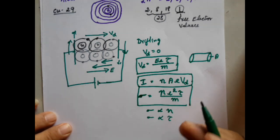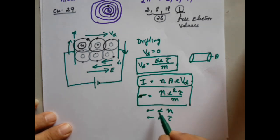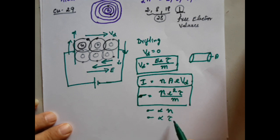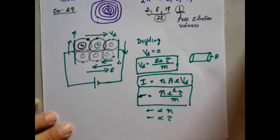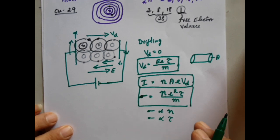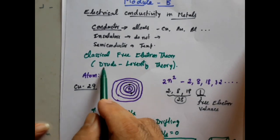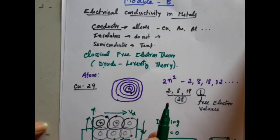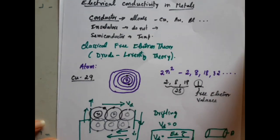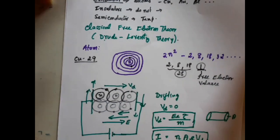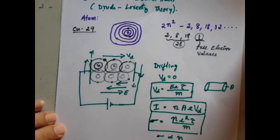This is what we understand based on the classical concept. Now, whether the classical free electron theory can explain all fundamental concepts — whether conductivity depends only on electron number or relaxation time — we come to know that the classical free electron theory, or Drude theory, fails to explain certain concepts. In the next class, we will look at exactly what the failures of this classical free electron theory are.